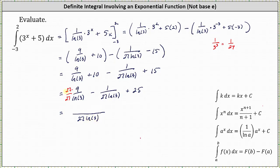The numerator is 27 times nine minus one. 27 times nine is 243, and 243 minus one is 242, giving us 242 divided by the product of 27 natural log three, plus 25 as the exact value of the definite integral.